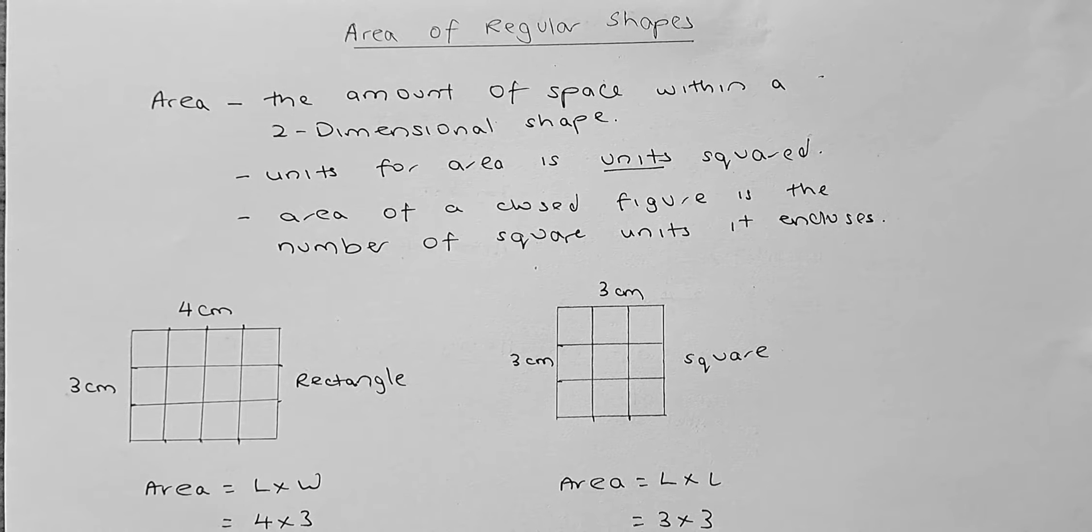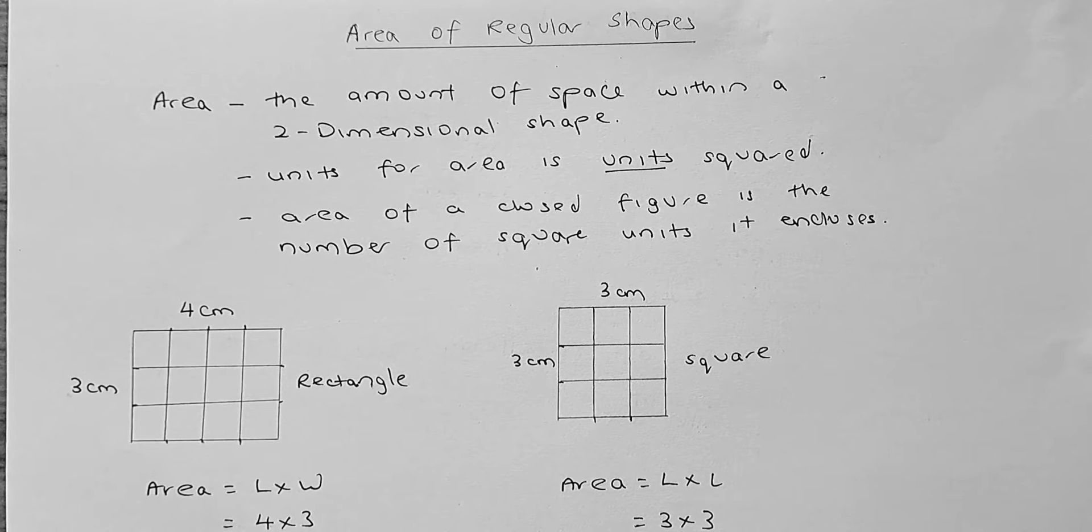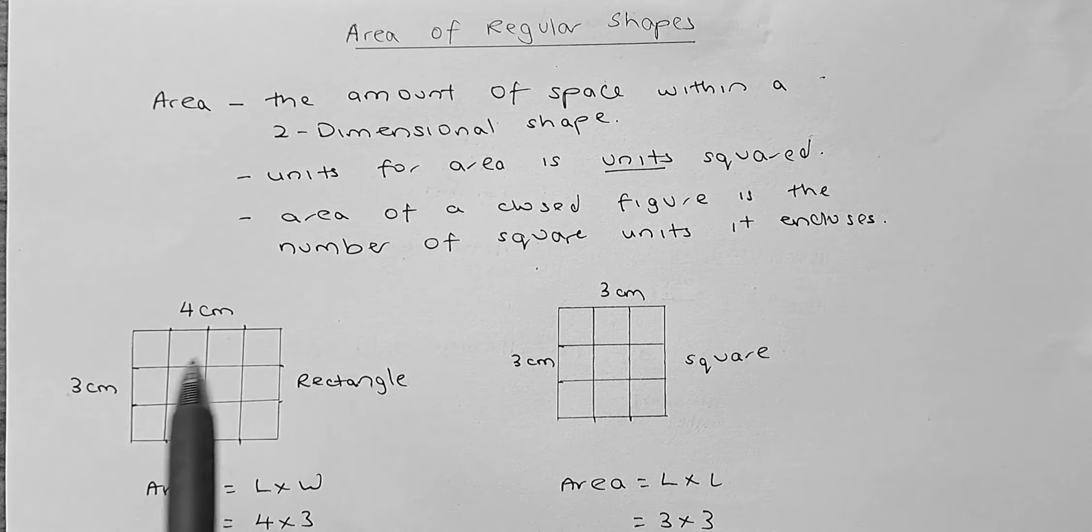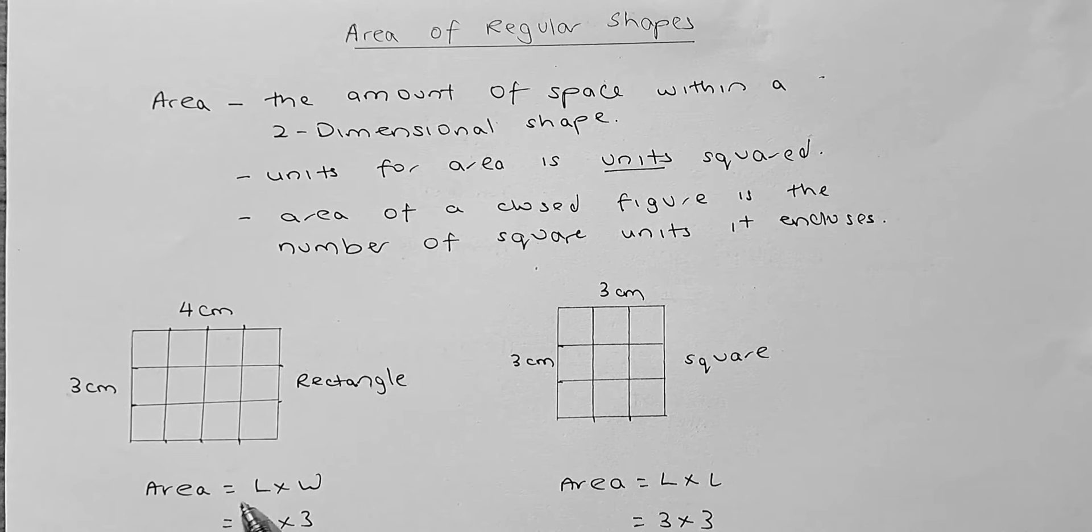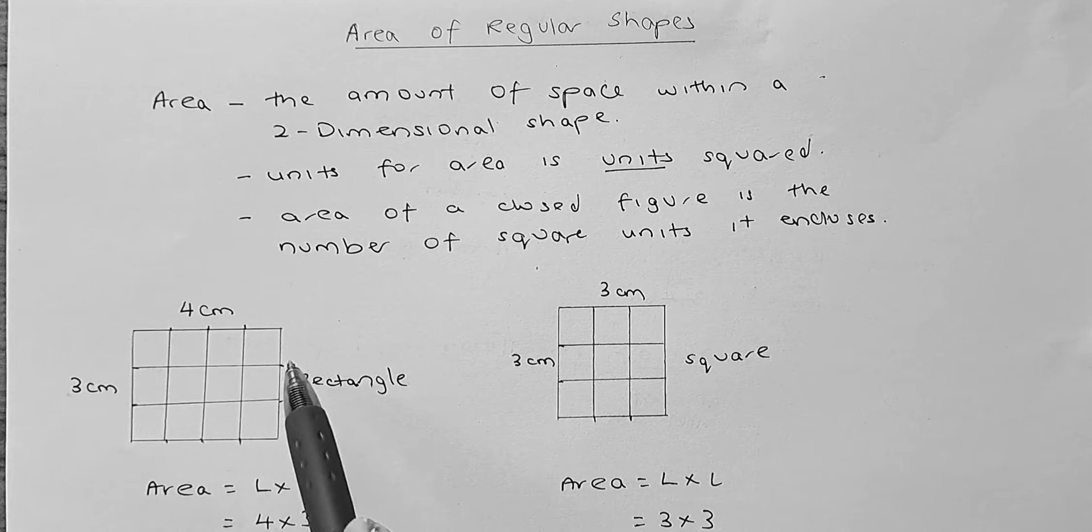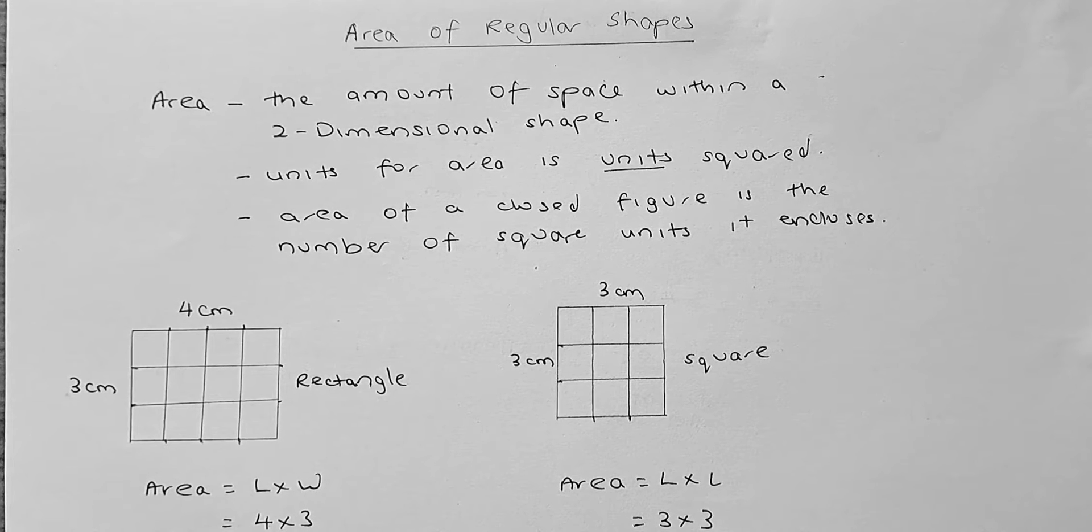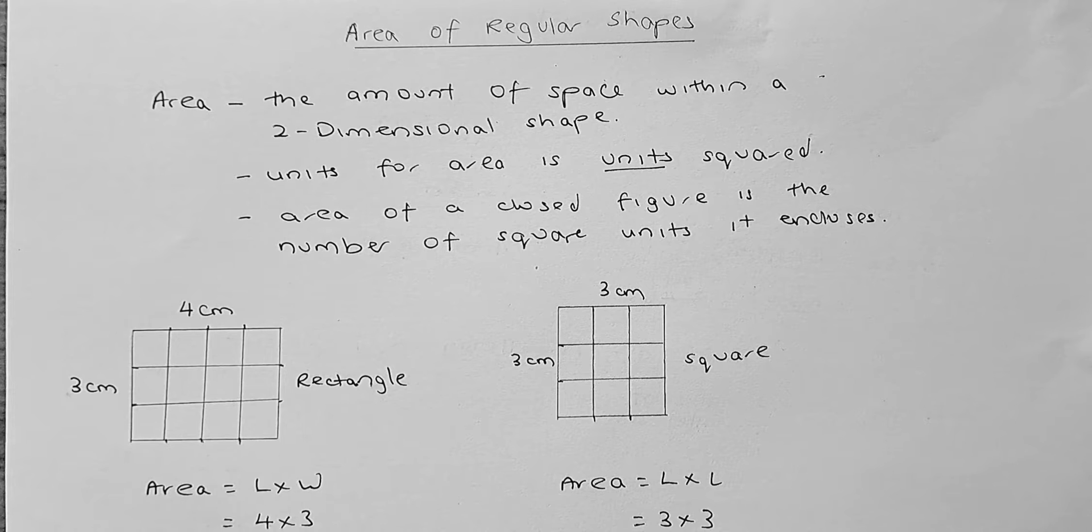The area of a closed figure is the number of square units it encloses. So, for example, if we have a rectangle, the length is 4 and the width is 3. To calculate the area, it's always length times width. So, length is 4, width is 3, you multiply them together and you get 12 cm squared.